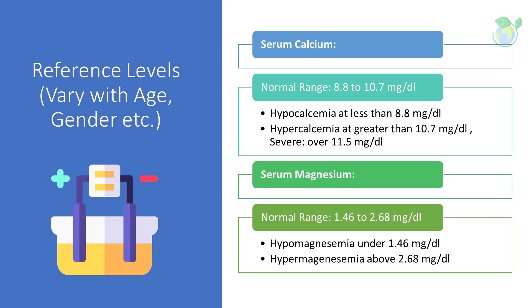Up next, we have serum calcium, which has a typical range of 8.8 to 10.7 mg/dL. Hypercalcemia occurs if serum calcium is above the levels, and is associated with malignancy, hyperparathyroidism, and chronic granulomatous disease. Below the range, hypocalcemia sets in, and it is indicative for acute pancreatitis, parathyroid hormone deficiency, after thyroidectomy, neck dissection, resistance to parathormone, hypomagnesemia, and sepsis.